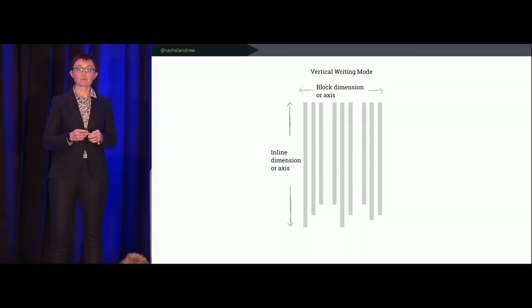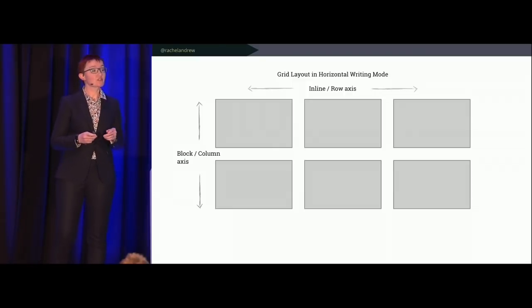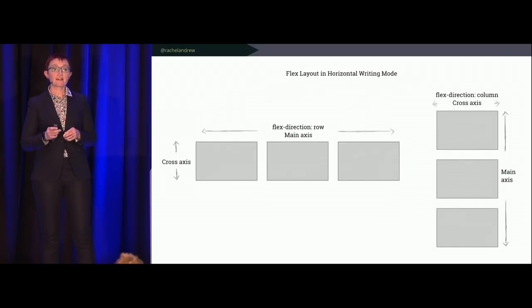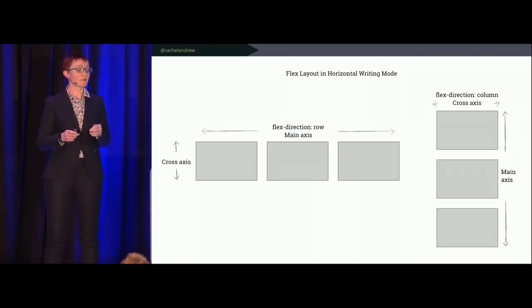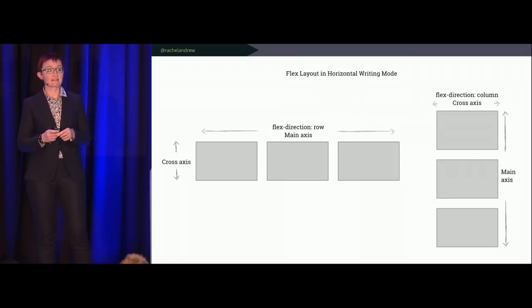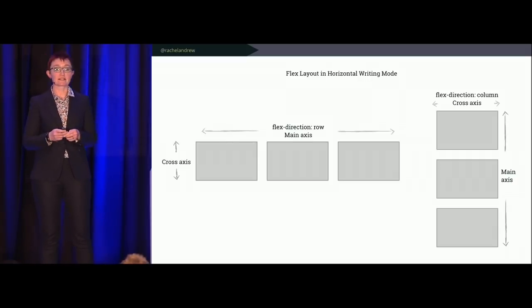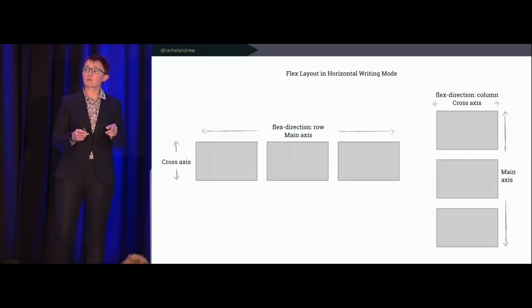In grid layout, the inline axis is sometimes described as the row axis and the block axis as the column axis. Flexbox is a bit more complicated — if you're struggling with alignment it's often easier to understand in grid than flexbox. In flexbox we have flex-direction of row or column, so we refer to the main and cross axis. The main axis is dictated by flex-direction: if you say flex-direction: row, that's the main axis; the cross axis runs perpendicular.